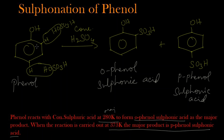To summarize: phenol reacts with concentrated sulfuric acid to give a mixture of ortho phenol sulfonic acid and para phenol sulfonic acid. At 280 Kelvin, the major product is ortho phenol sulfonic acid. When the temperature is increased to 373 Kelvin, the major product becomes para phenol sulfonic acid. Thank you.